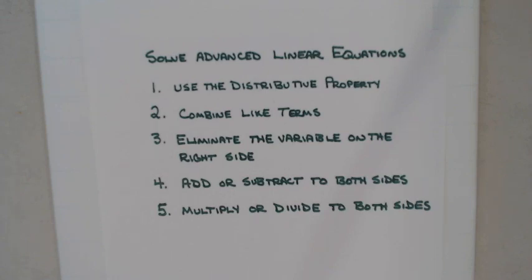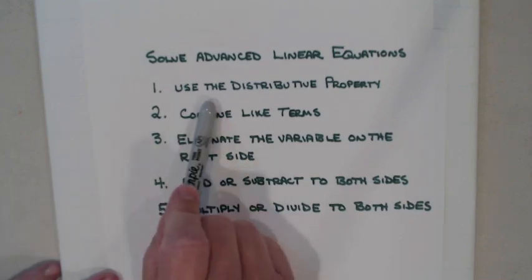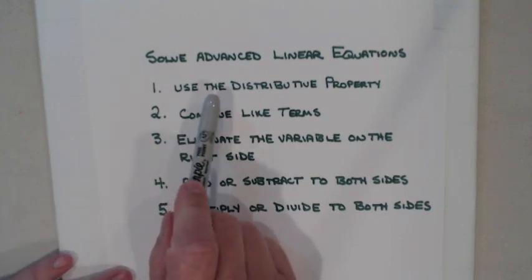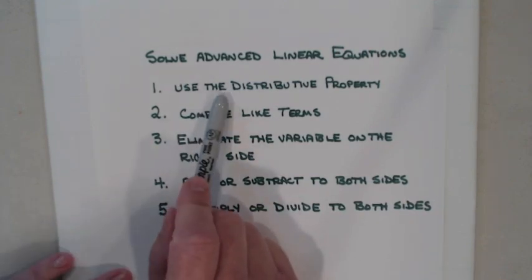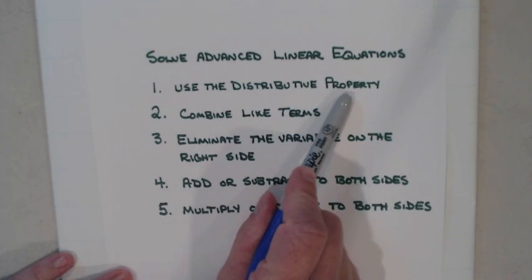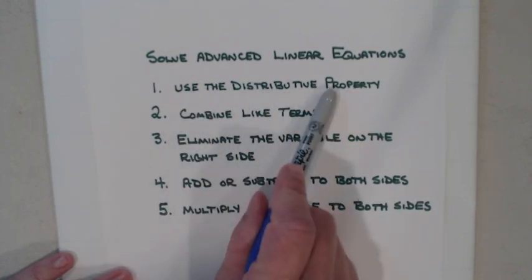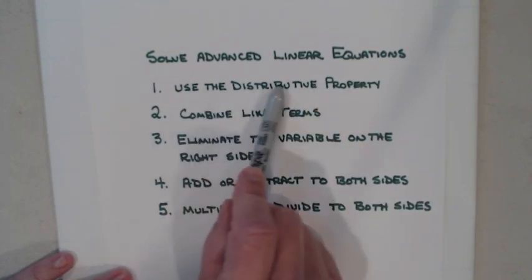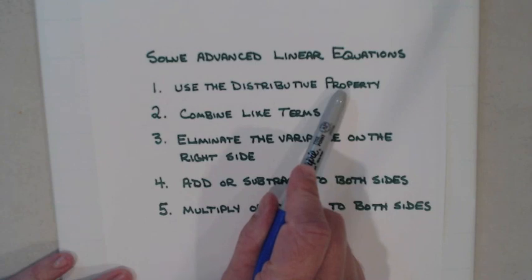When they give you an equation, the very first thing you need to look for is parentheses. If the equation has parentheses, you need to always use the distributive property first. If it doesn't have parentheses, you don't have to worry about using the distributive property.